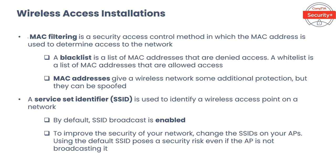MAC filtering is a security access control method in which the MAC address is used to determine access to the network. Most wireless routers and access points can filter devices based on their MAC addresses — a unique identifier for network adapters. When MAC address filtering is used, only devices with MAC addresses configured in the router or access point are allowed to connect. MAC filtering permits and denies network access through the use of blacklists and whitelists.